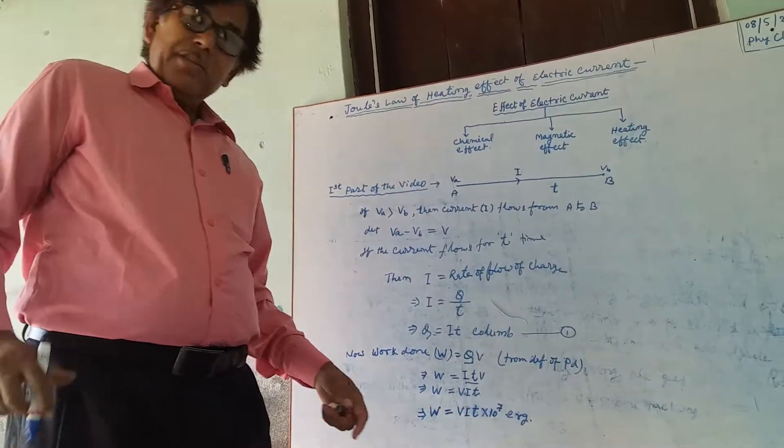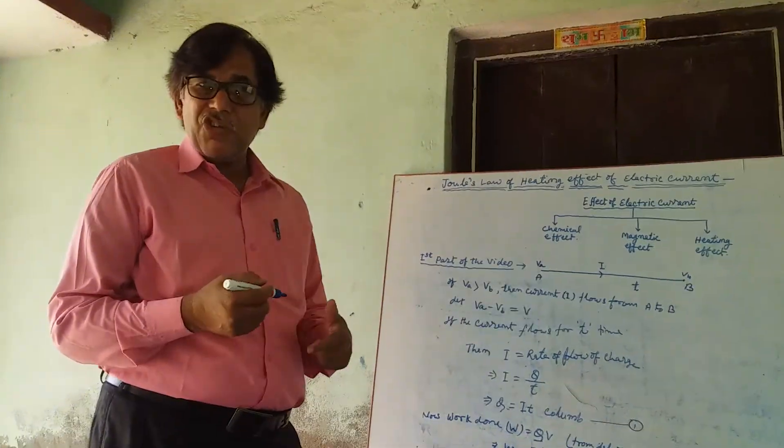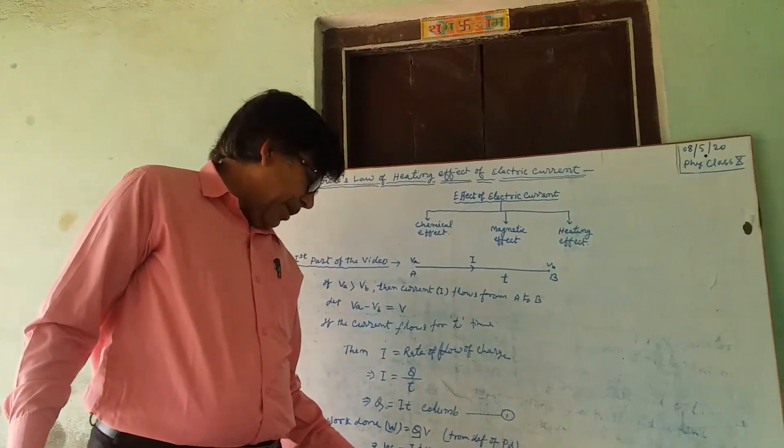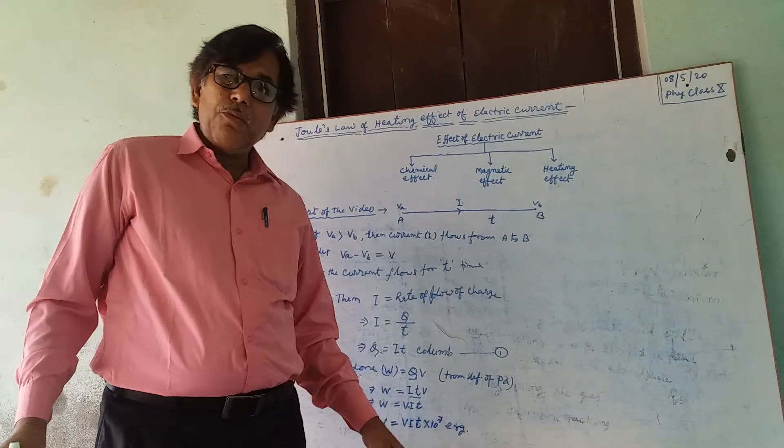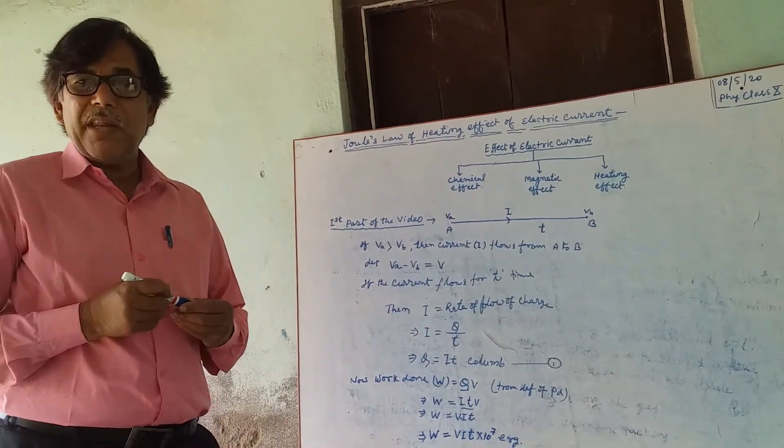If the unit is taken in CGS system, W equals VIT into 10 to the power 7 erg.